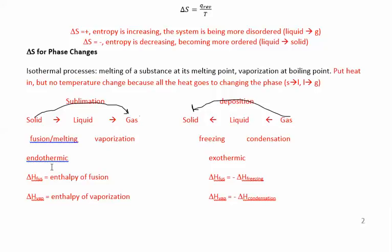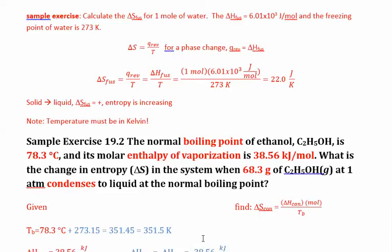When looking at the enthalpy of these processes, you have the enthalpy of fusion, enthalpy of vaporization, and enthalpy of sublimation. The endothermic ones have positive delta H, and their reverse processes are exothermic to the same extent. For example, if the enthalpy of fusion is 500 kJ/mol, the enthalpy of freezing would be negative 500 kJ/mol. When doing a problem, you really have to read carefully: are they asking for enthalpy of vaporization or enthalpy of condensation?